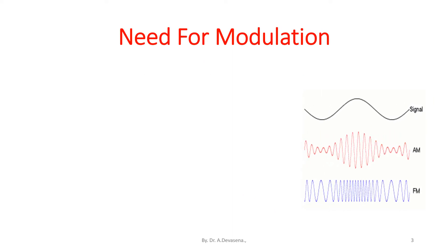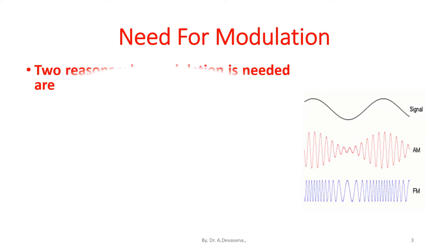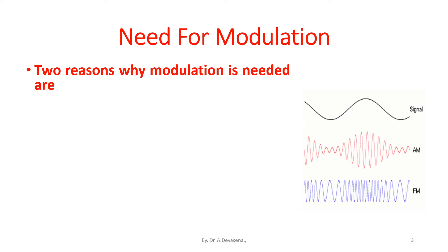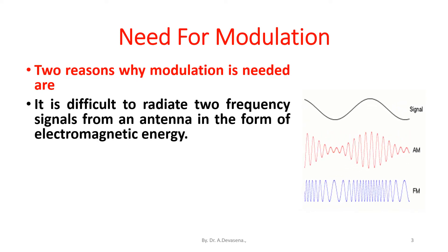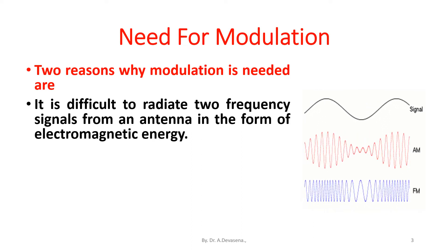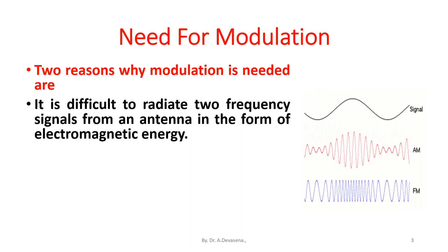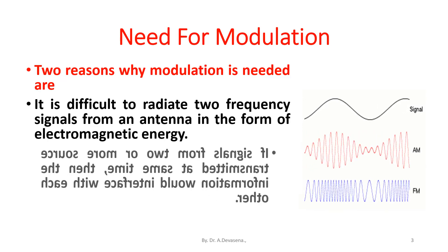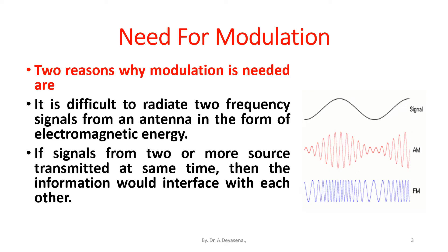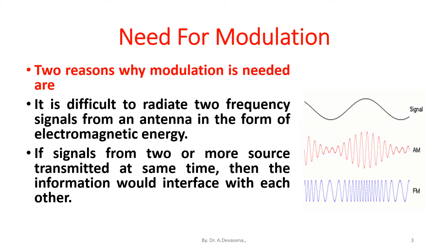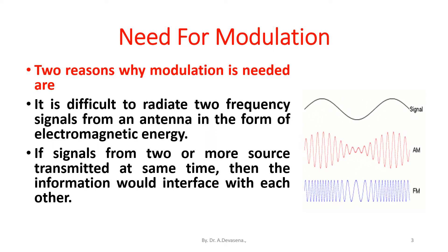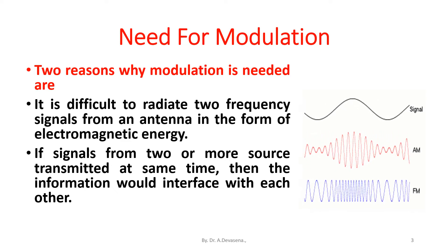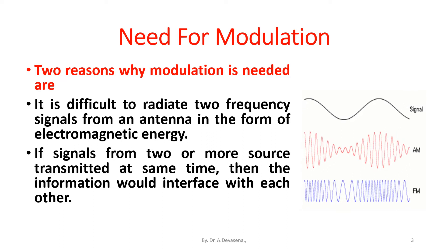There are two reasons why modulation is needed. First, it is difficult to radiate low frequency signals from an antenna in the form of electromagnetic energy. Second, if signals from two or more sources are transmitted at the same time, the information would interfere with each other.